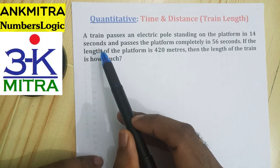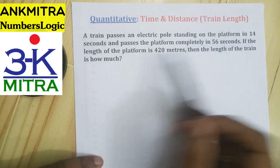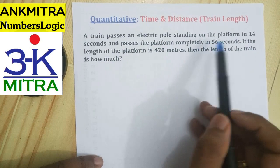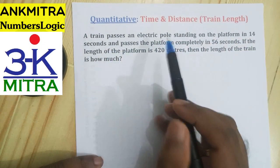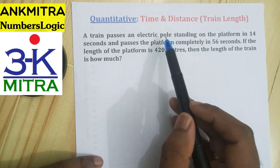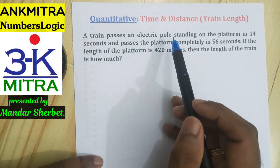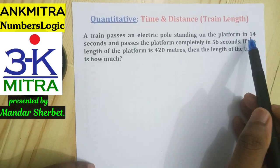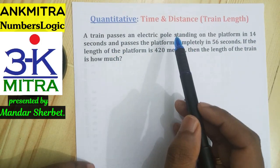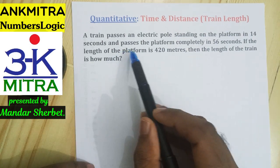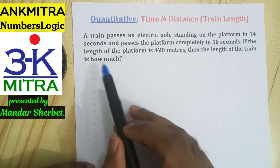In this question, the train passes an electric pole standing on the platform in 14 seconds. That means 14 seconds is the time required for the entire length of the train to pass the pole — the width of the pole is insignificant, only the train's length matters. So 14 seconds is the time required for the entire length of the train to pass a single point. Now, if it passes the entire platform in 56 seconds, and the length of the platform is 420 meters, we need to find the length of the train.